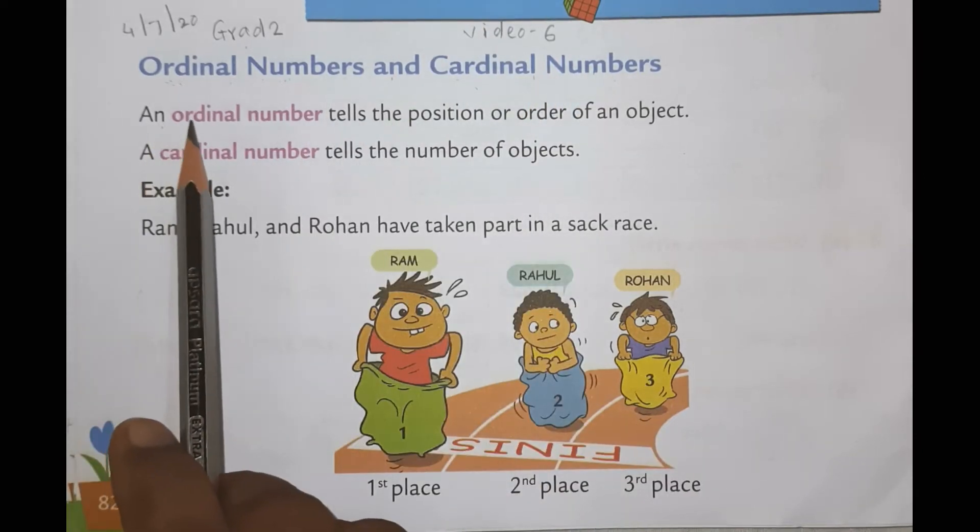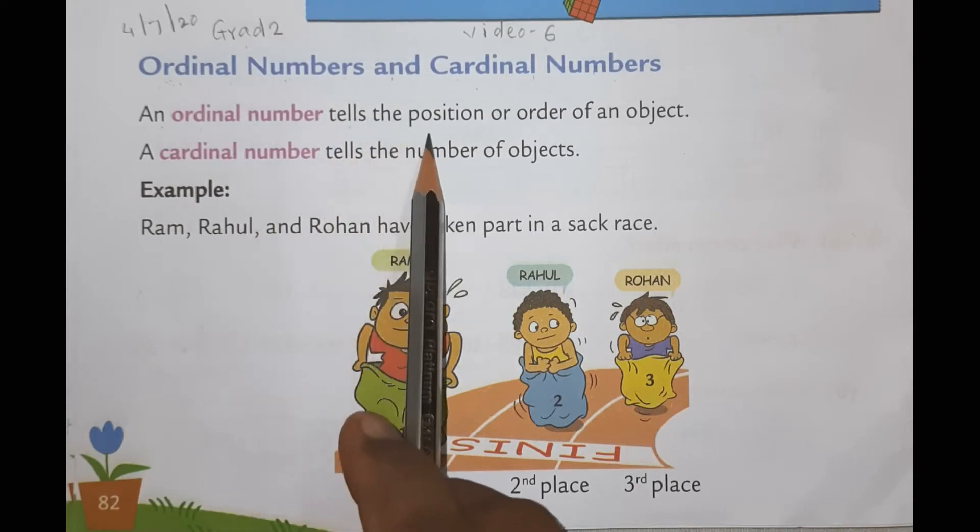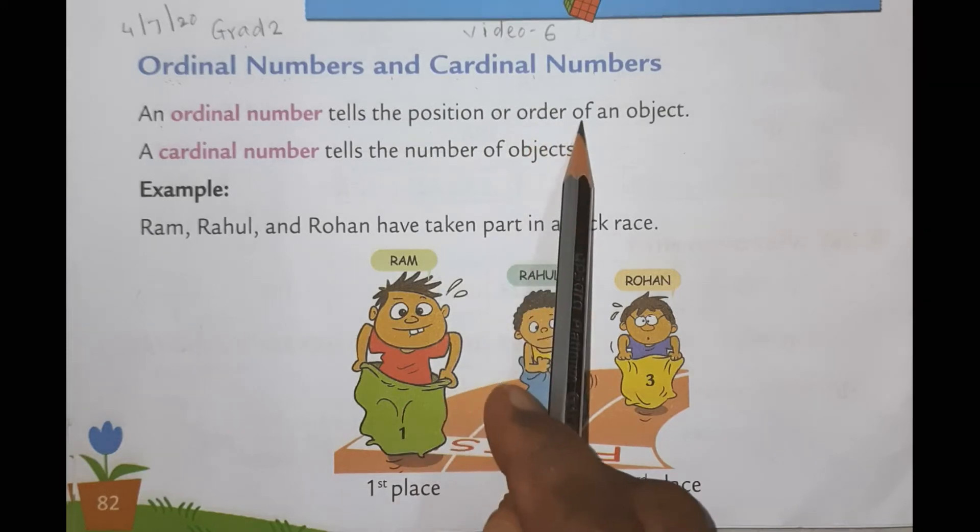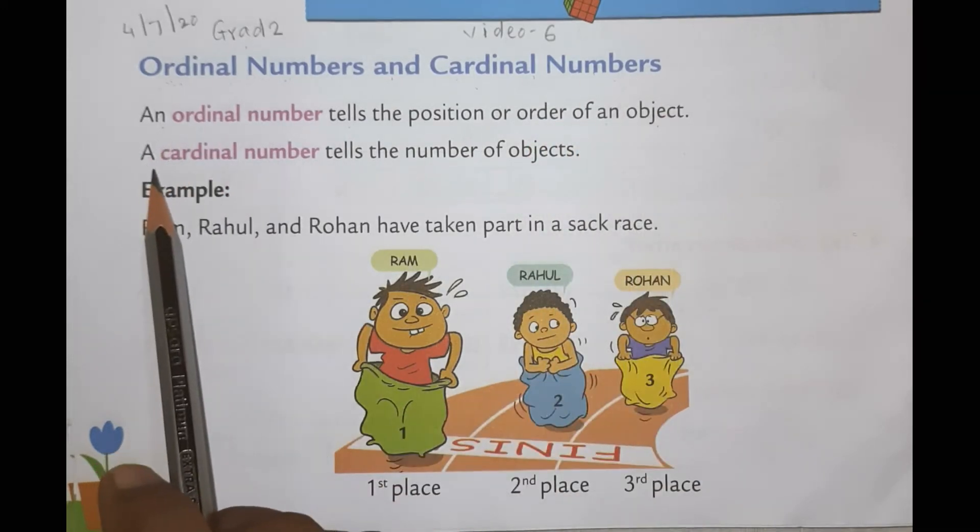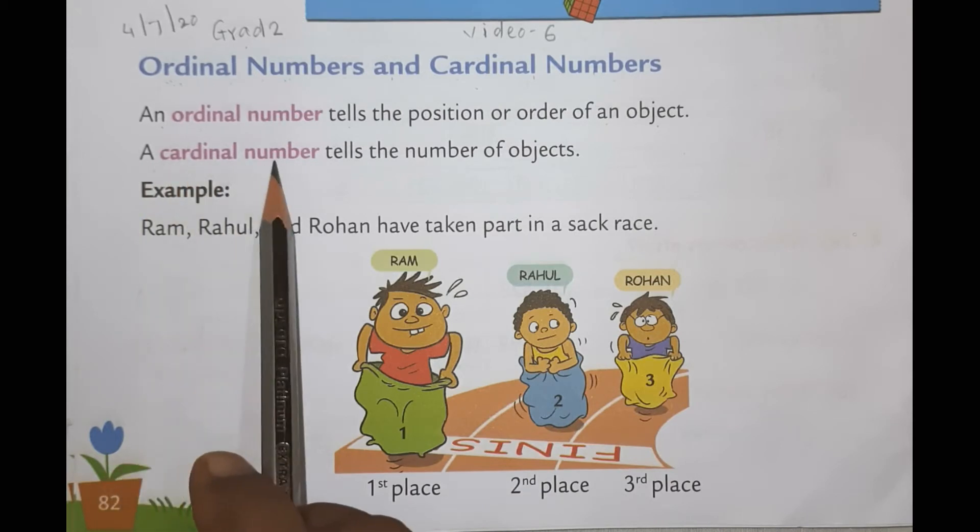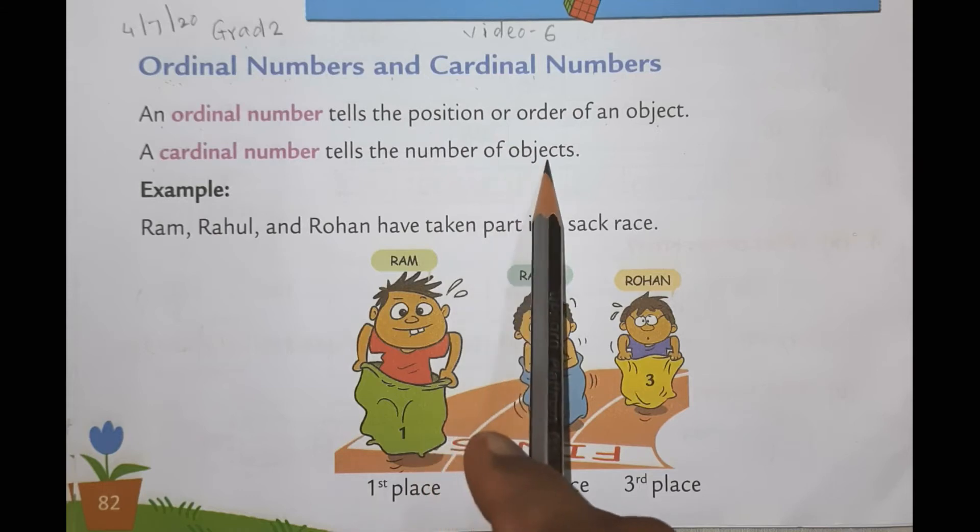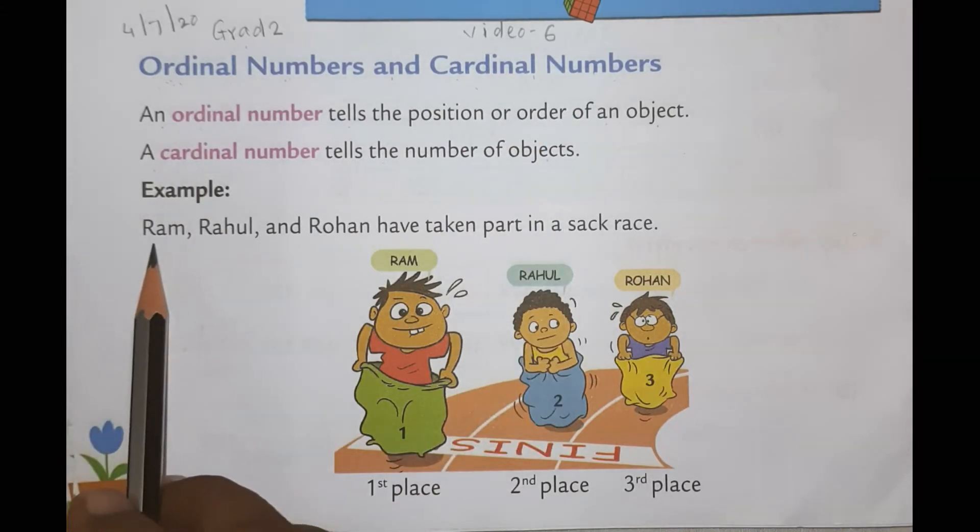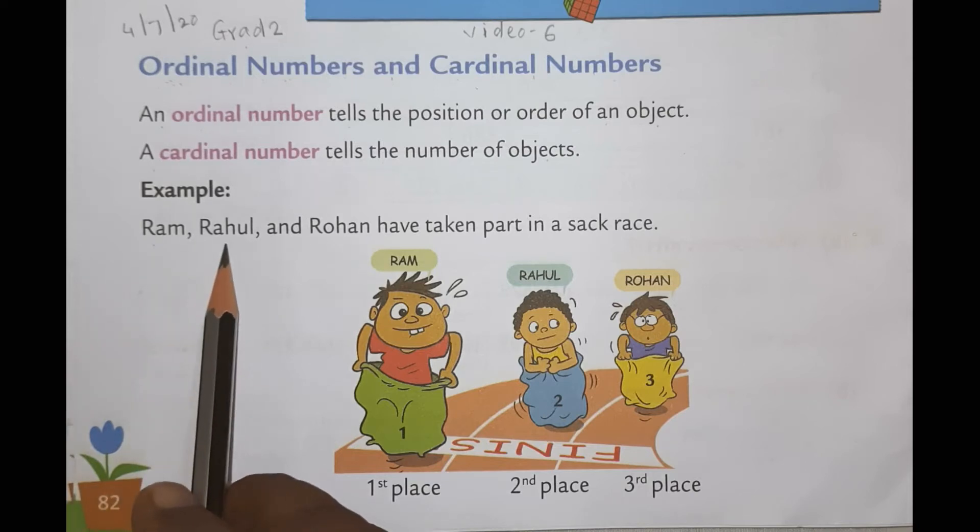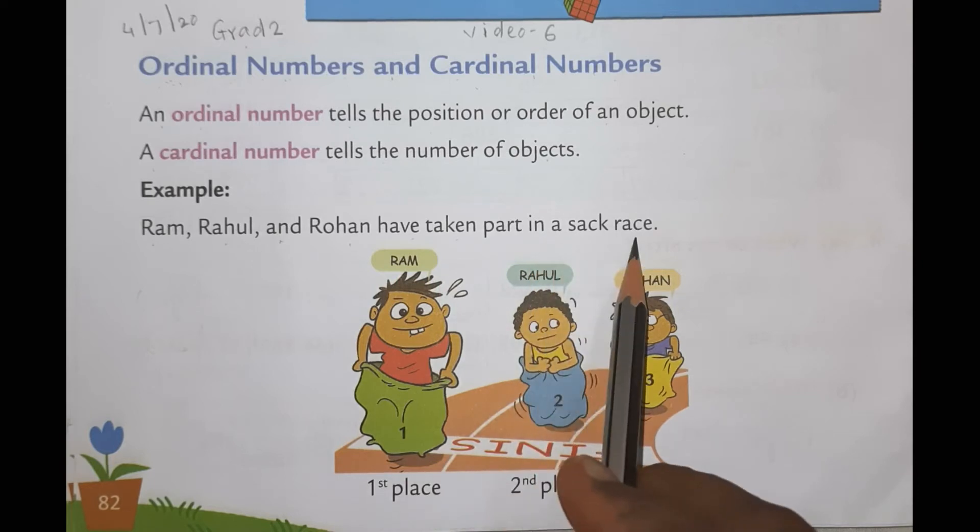An ordinal number tells the position or order of an object. And a cardinal number tells the number of objects. For example, Ram, Rahul and Rohan have taken part in a sack race.